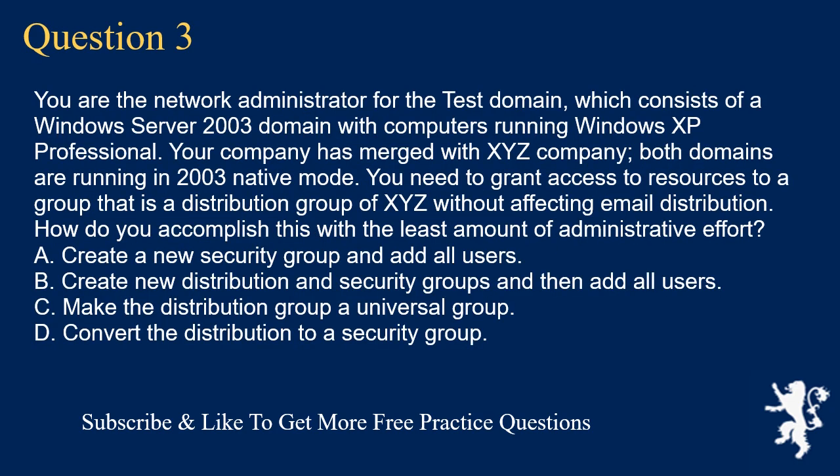You are the network administrator for the test domain, which consists of a Windows Server 2003 domain with computers running Windows XP Professional. Your company has merged with XYZ Company. Both domains are running in 2003 native mode. You need to grant access to resources to a group that is a distribution group of XYZ without affecting email distribution. How do you accomplish this with the least amount of administrative effort? A. Create a new security group and add all users. B. Create new distribution and security groups and then add all users. C. Make the distribution group a universal group. D. Convert the distribution to a security group.